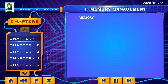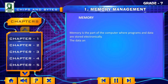Memory is the part of the computer where programs and data are stored electronically. The data and programs are stored at two different levels: Main, that is internal memory, and Auxiliary, that is external memory.